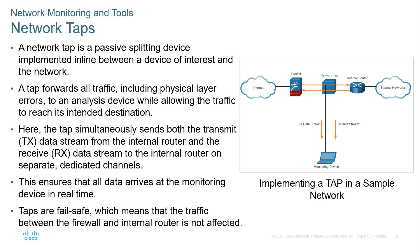As the network scales, transmit and receive are kept separate, and we may further separate transmit for internal versus external traffic depending on how robust we want our TAP to be. This process of separating transmit and receive ensures that all data arrives at the monitoring device in a more real-time manner. TAPs are fail-safe, meaning traffic between the firewall and internal router is not affected - it clones the data passively.